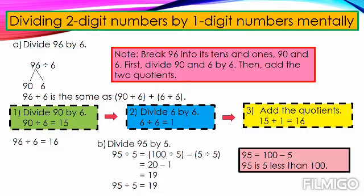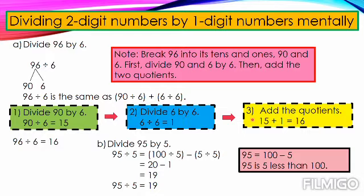As you see here, 96 divided by 6 is computed as follows. The first step: 90 divided by 6 equals 15. The second step: 6 divided by 6 equals 1. The third and last step: add the two initial quotients — 15 plus 1 equals 16. So, 96 divided by 6 is equal to 16.